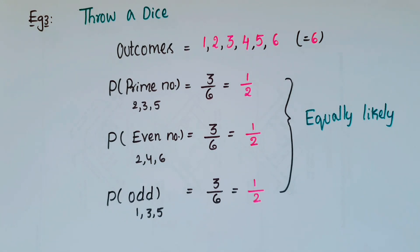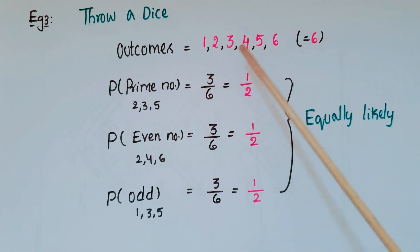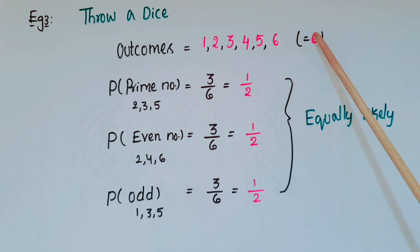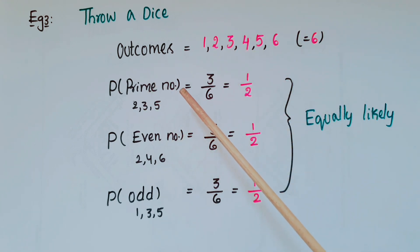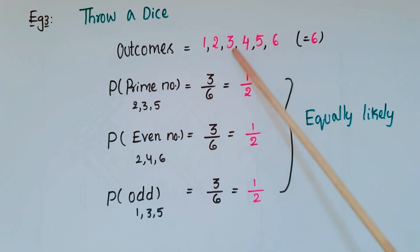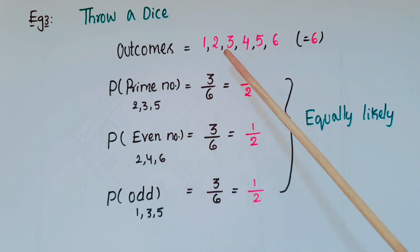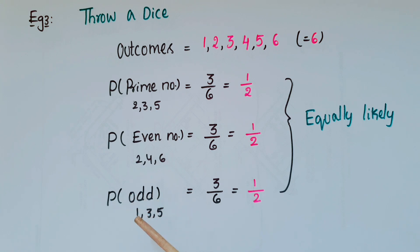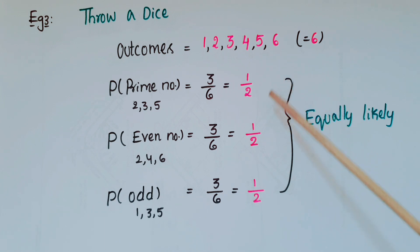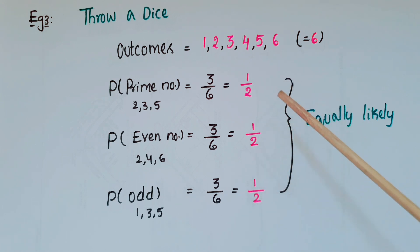Here is another example for equally likely cases. Throw a dice — outcomes are 1, 2, 3, 4, 5, 6, so total outcomes are six. Probability of getting a prime number: the primes are 2, 3, 5 — so 3/6 = 1/2. Probability of getting an even number: 2, 4, 6 — so 3/6 = 1/2. Probability of getting an odd number: 1, 3, 5 — so 3/6 = 1/2. Since all these probabilities are the same, these are equally likely.